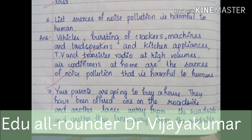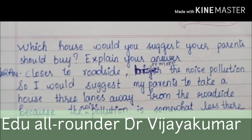Your parents are going to buy a house. They have been offered one on the roadside and another three lanes away from the roadside. Which house would you suggest your parents should buy? A house closer to the roadside has more noise pollution. I would suggest my parents to take a house three lanes away from the roadside because the noise pollution is somewhat lesser there.